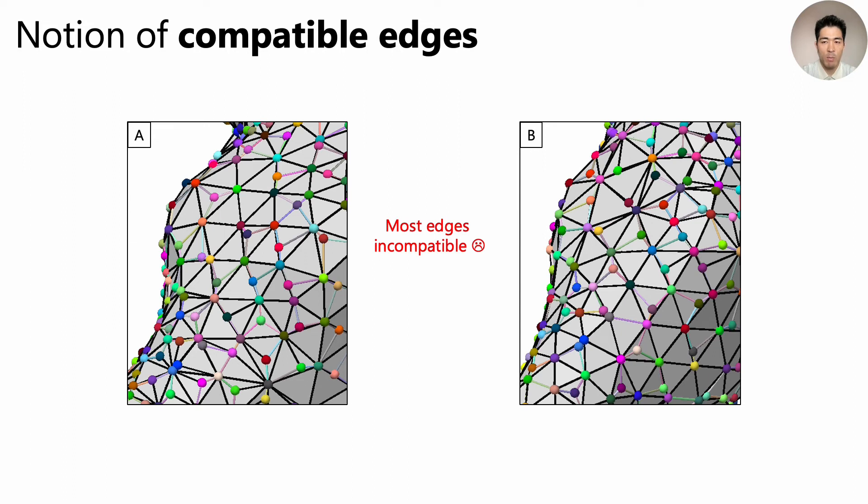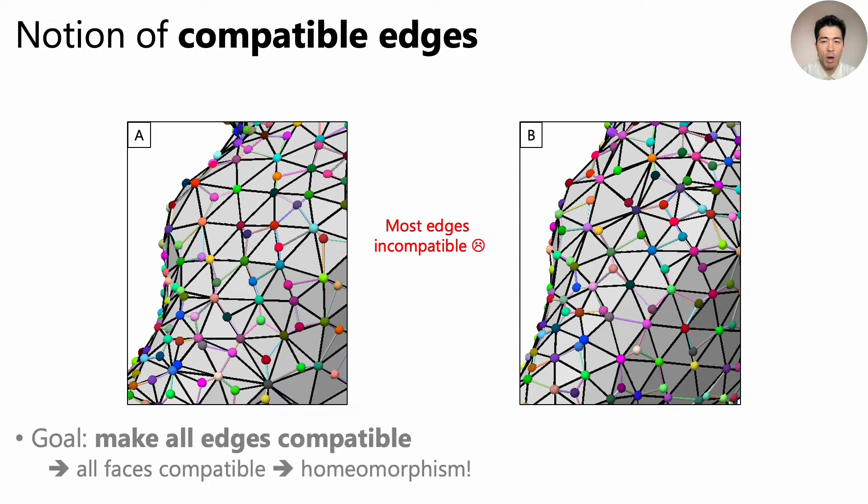Using this edge coloring scheme, we see that after the vertex insertion step, most edges are incompatible. Our goal then is to make all the edges compatible. If we succeed in doing so, all the faces become compatible, and we get a homeomorphism.